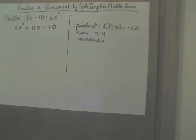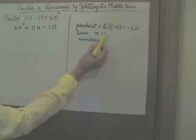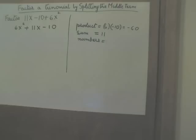So we need to find two other numbers whose product is negative 60 and whose sum is 11. How about 5 times negative 12? 5 times negative 12 certainly gives me negative 60. But if I add 5 and negative 12, I don't get 11. I get negative 7. So those don't work. So you can see a little bit of trial and error is at work here.